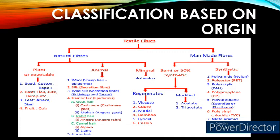Synthetic man-made fibers are completely made using chemicals. The semi-synthetic man-made fibers are further classified into regenerated semi-synthetic man-made fiber and modified semi-synthetic man-made fibers. The examples for regenerated semi-synthetic man-made fibers are viscose, cupro, modal, bamboo, lyocell, and casein. The examples for modified semi-synthetic man-made fibers are acetate and triacetate.